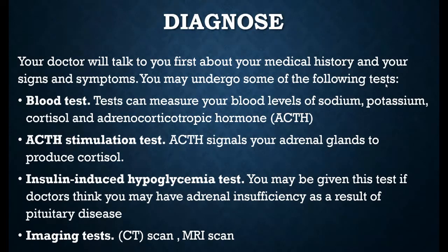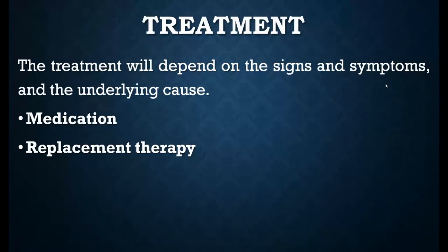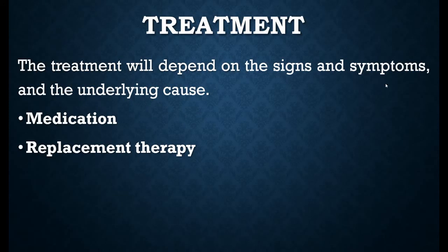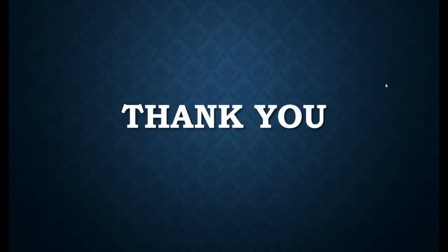Diagnosis can be made through blood tests checking sodium, potassium, ACTH, and cortisol levels. There is also an insulin-induced hypoglycemia test to check for diabetes, and imaging tests such as CT scan and MRI scan to check for cancer or tumors. There are two main treatments based on signs and symptoms: medication and hormone replacement therapy to replace the hormones that are deficient in the body.